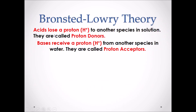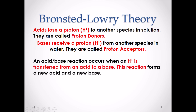That finally brings us to the Bronsted-Lowry Theory of acids and bases, the theory we will focus on in Chemistry 30. It is a more complete theory of acids and bases. In the Bronsted-Lowry Theory, acids lose a proton (H+) to another species in solution — they are called proton donors. Bases receive a proton (H+) from another species in solution — they are called proton acceptors.